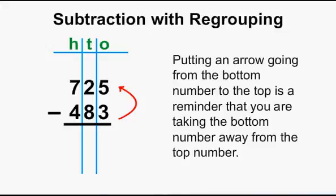Putting an arrow going from the bottom number to the top is a reminder that you are taking the bottom number away from the top number.